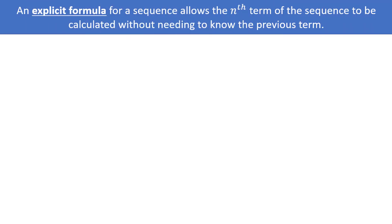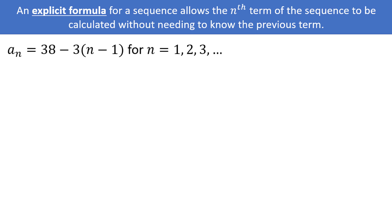Other than simply listing out the terms of a sequence, there are two main ways that a sequence can be expressed. The first is what is considered explicit. If a sequence is expressed explicitly, that means the formula allows you to find the nth term of the sequence without needing to know the previous term. For example, a sub n is equal to 38 minus 3 times (n minus 1), for n equals 1, 2, 3, ... is an arithmetic sequence expressed explicitly.